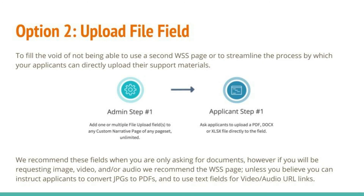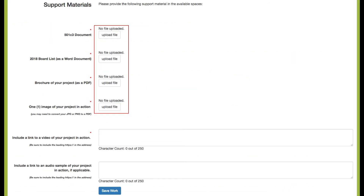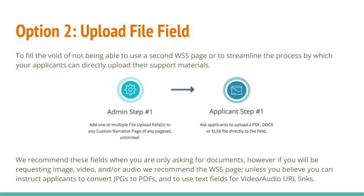That was all option one using the work sample tools. Your next option, to alleviate that two-step process, is to use the upload file field. This allows you to ask for a document right on the custom narrative page, and allows your applicant to upload directly there — no two-step process. You'll add one or multiple file upload fields to any custom narrative page of any page set, an unlimited amount, and your applicant uploads a PDF, docx, or xlsx file directly to that field. We recommend using this to fill the void of not being able to use a second work sample select page, or to streamline how applicants upload support materials.